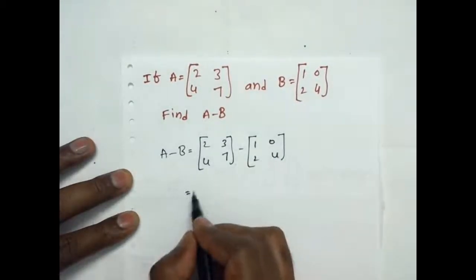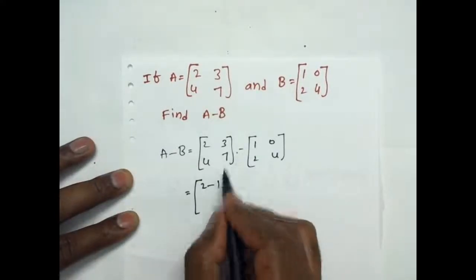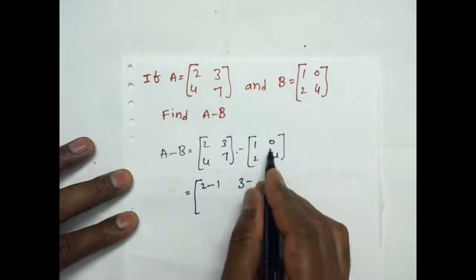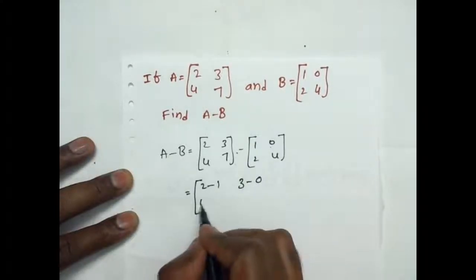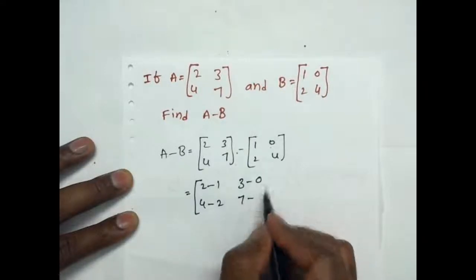That is equal to 2 minus corresponding element is 1, 3 minus corresponding element 0, 4 minus corresponding element 2, 7 minus corresponding element 4.